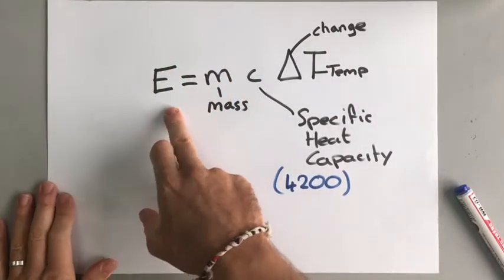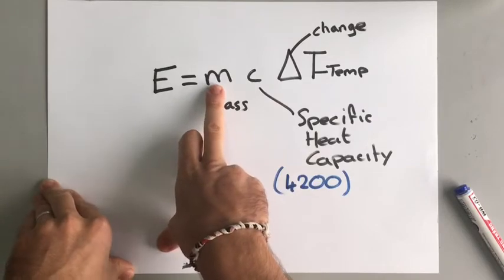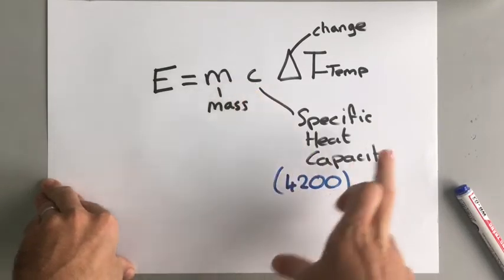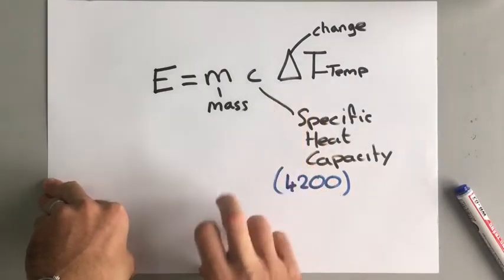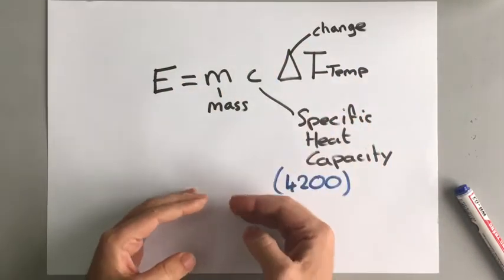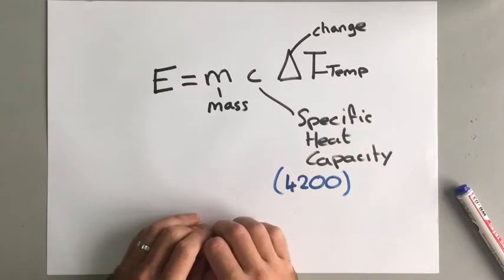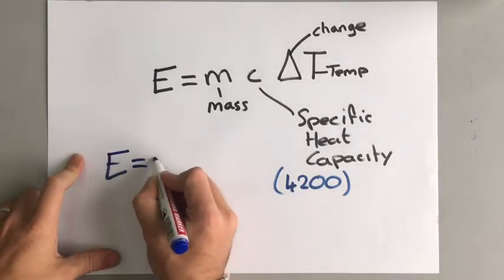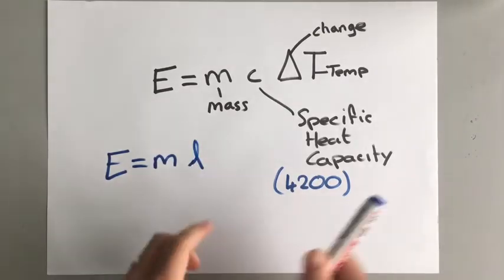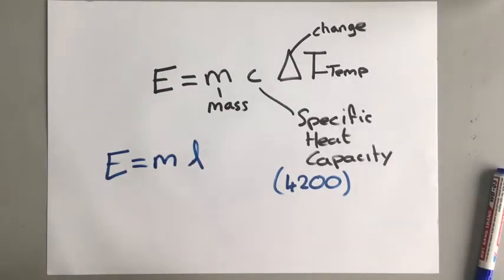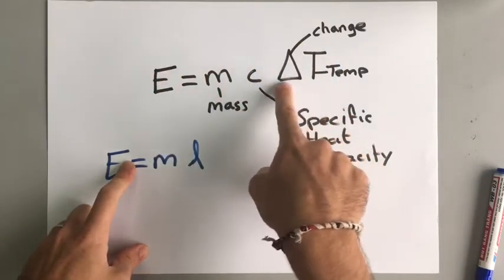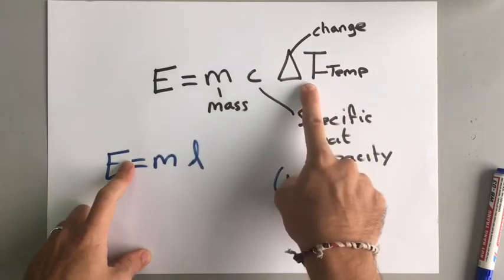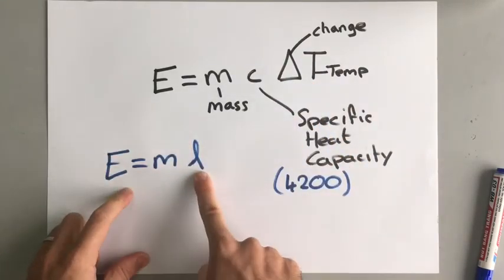The energy you need depends on the mass, the specific heat capacity of the liquid, solid, or whatever it is, and how much you want to change the temperature by. We use E = mcΔT for calculating the change in temperature when something is not changing state. The latent heat equation E = mL is used when the substance is changing state. You have two slightly different equations: one involves changing temperature, and the other is about changing state.